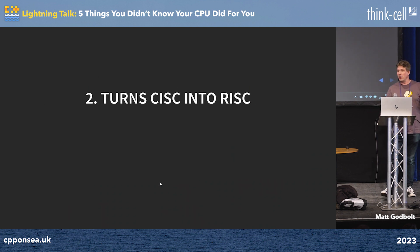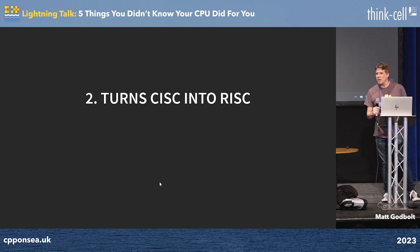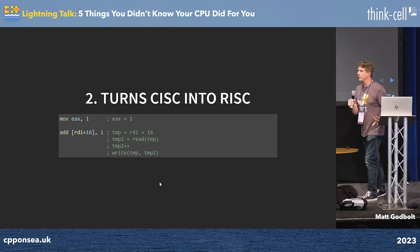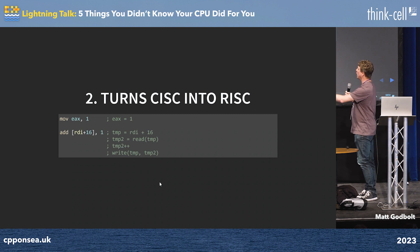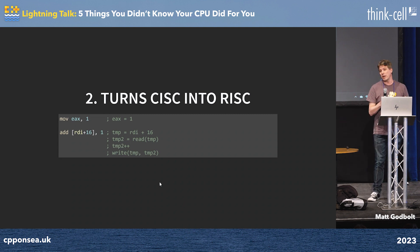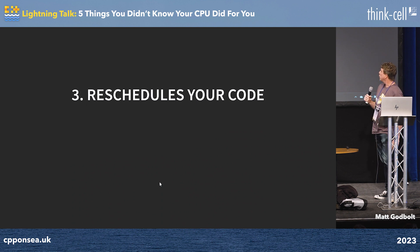The second thing it does is it turns CISC into RISC. We all remember the CISC-RISC wars back in the day — ARM is RISC and x86 is CISC. Well, your x86 processor is really a RISC processor; it's just hiding it from you. The CISC nature of the instructions you see, such as ADD RDI+16, 1, is a whole bunch of operations, and they can be broken down into four things. That's exactly what's happening inside your CPU — it turns those big instructions into tiny little instructions and schedules them internally in its own unique way.